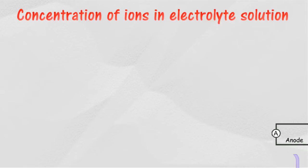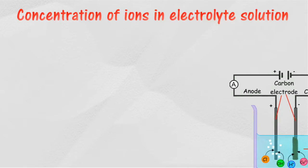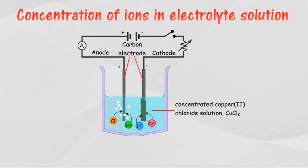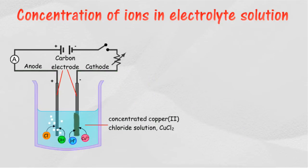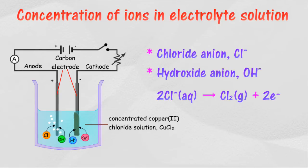The concentration of ions in the electrolyte solution also affects the choice of ions to be discharged. Concentration normally affects the choice of ions discharged at the anode only — the more concentrated an ion, the more likely it is to be discharged. For example, if the concentration of chloride ion is higher than hydroxide ion in an electrolyte solution, chloride ions will be preferably discharged at the anode.